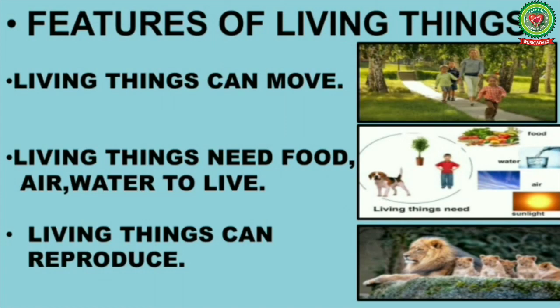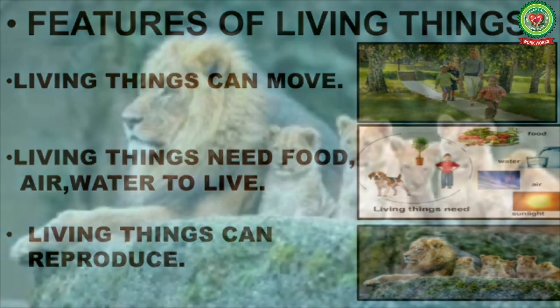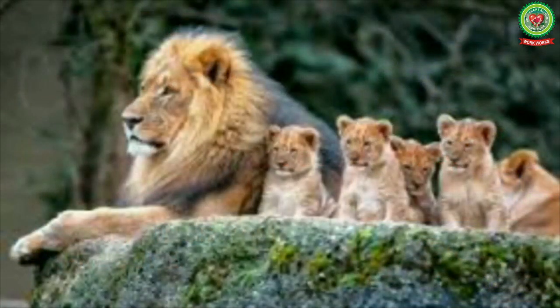The next feature of living things is they can reproduce, meaning they can give birth to their young ones. Dear kids, as you are watching in this picture, a lioness with her cubs. So it means living things can reproduce — they can give birth to their young ones.